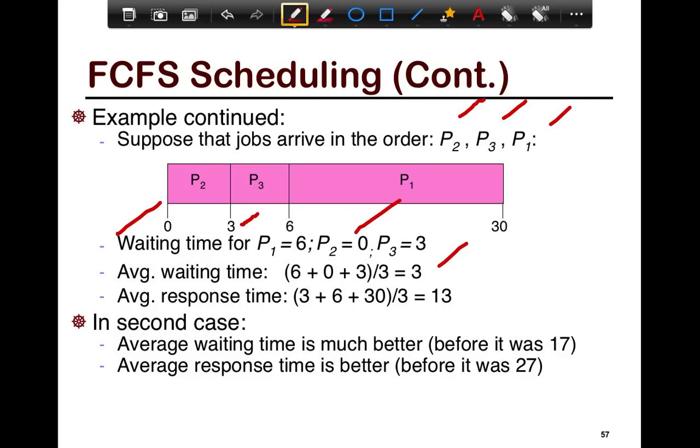Your average response time also falls down because the short jobs got started up first. If you compare the previous case, 3 versus 17, and if you compare the response time, it's 13 versus 27. Why did this happen? This happened because essentially we had a much nicer schedule to play with. The order that the jobs arrived in, we just got lucky. The short jobs came up before the long ones. They were able to run before the long ones, and essentially they brought down the average response time and the average waiting time.